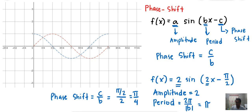Remember, if the sign is minus, we shift the graph to the right. But if it is plus, we shift it to the left. So if we combine all those transformations, let us graph them one by one.